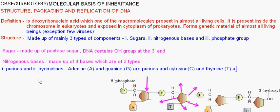Now, what is the difference between DNA and RNA? In case of RNA — ribonucleic acid — instead of the OH group, only O is present, meaning no hydroxyl group. And instead of Thymine, Uracil is present in RNA.